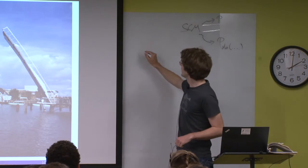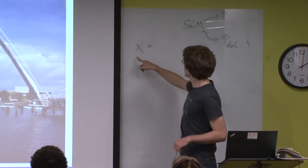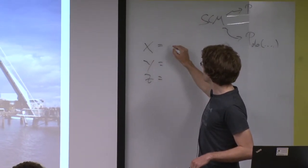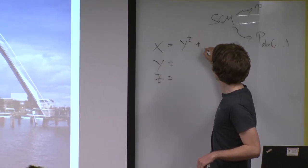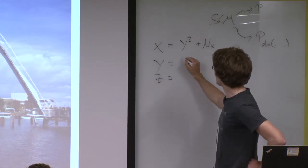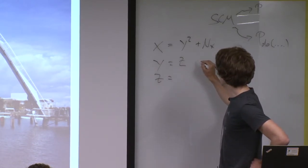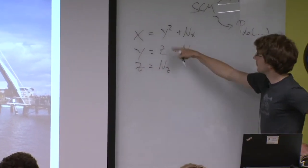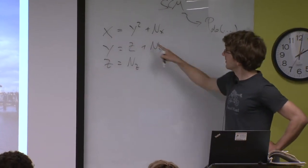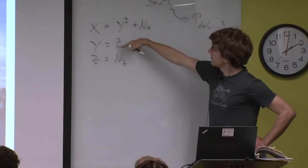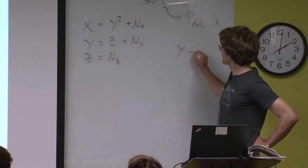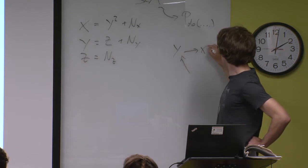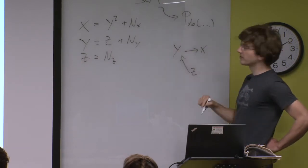What was a structural causal model? If you write down an example, you may have three random variables: x is a function of y plus some noise, y is a function of z plus some noise, and z is just noise. There's a corresponding graph drawn by looking at the variables on the right-hand side - y is causing x and z is causing y.